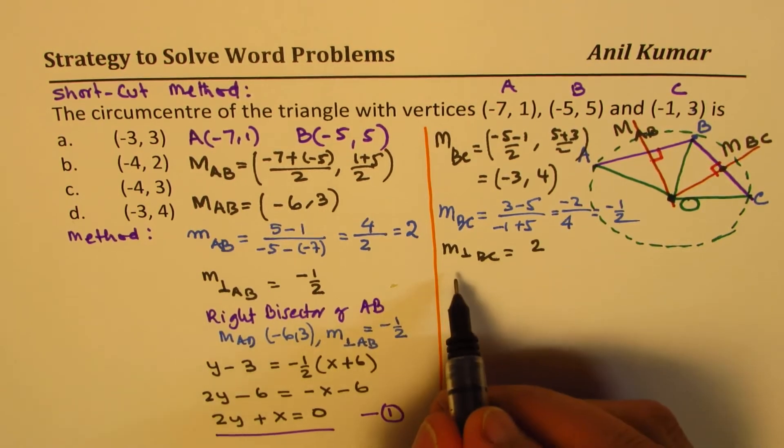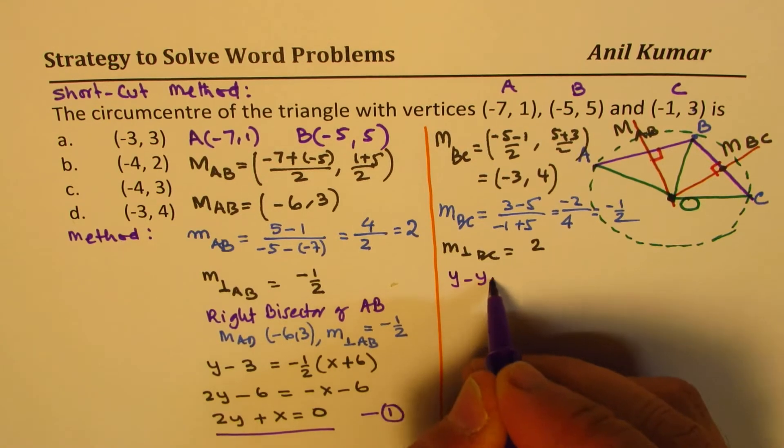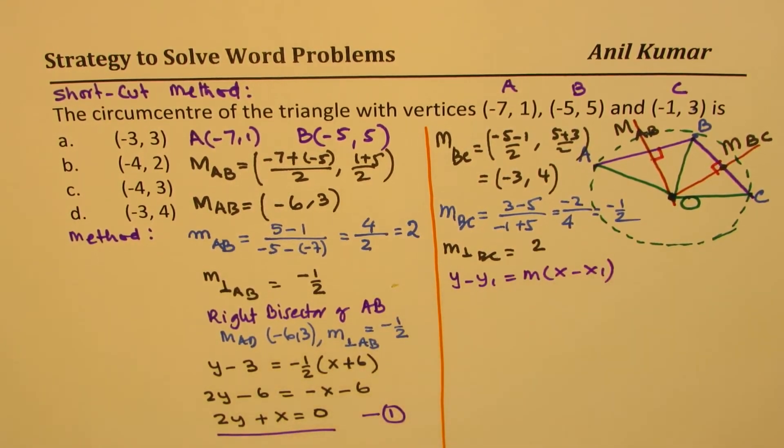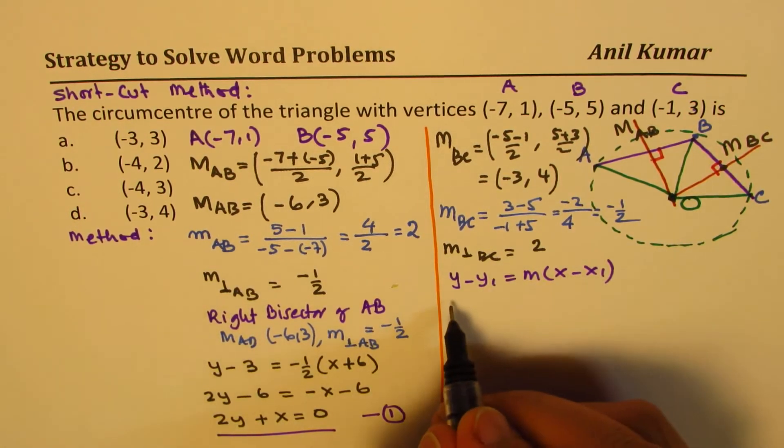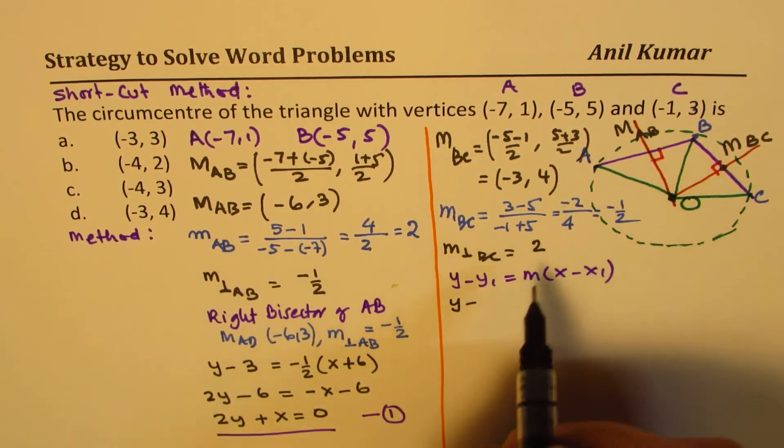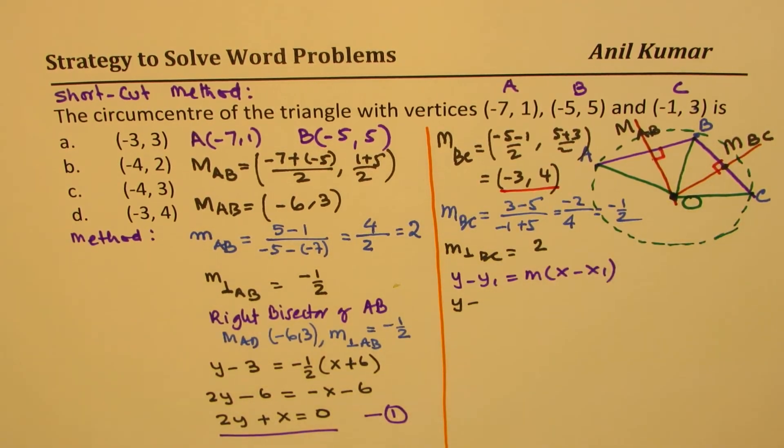So we will write the equation of the form which we used earlier. Let me write down the equation. y minus y1 equals to m times x minus x1. So that is the equation which we are going to use. So y minus the y1 value of the midpoint, we are looking into the midpoint. Which is (-3,4).